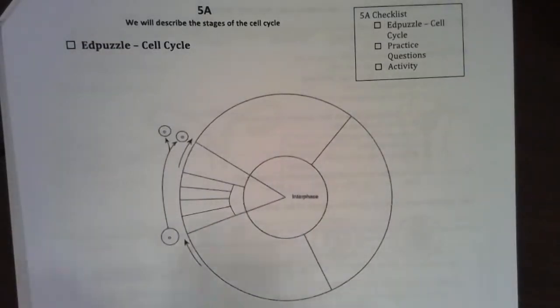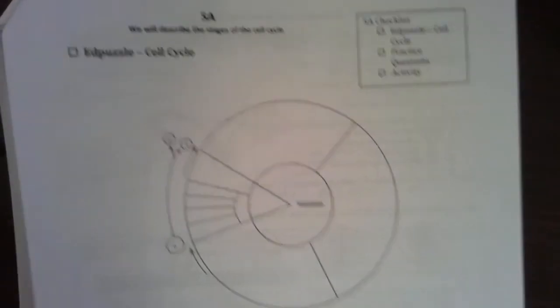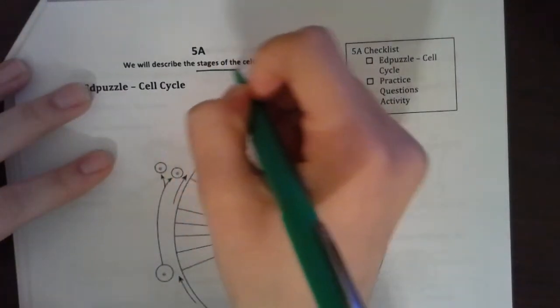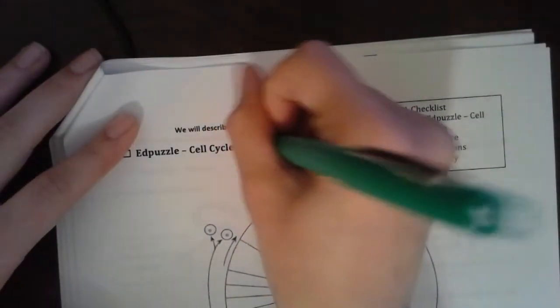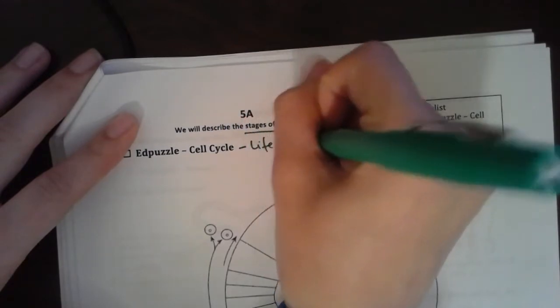Well hello, alright. In this video we're going to be going over standard 5A, which is describing the stages of the cell cycle, aka the phases. Alright, cell cycle - this is the life cycle of a cell.